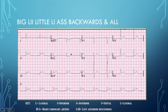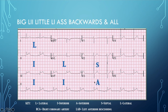Here's an example 12-lead. We'll start with leads 1, 2, and 3. We'll skip AVR, then go to AVL and AVF. Then we'll build the rest with V3 to V1 — ass backwards — starting at V3 and working our way up to V1, and then V4 through V6, which is 'all.'